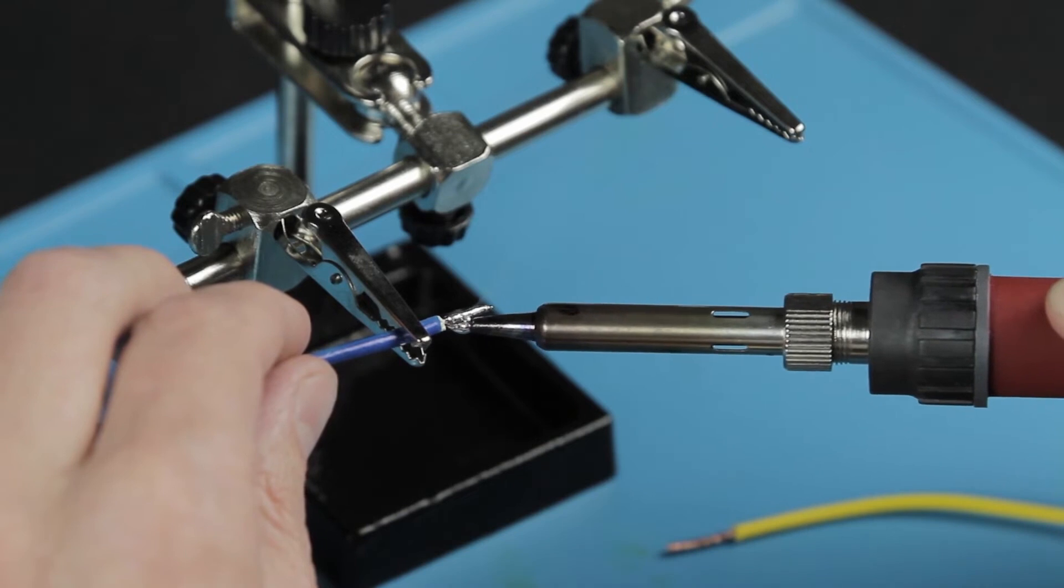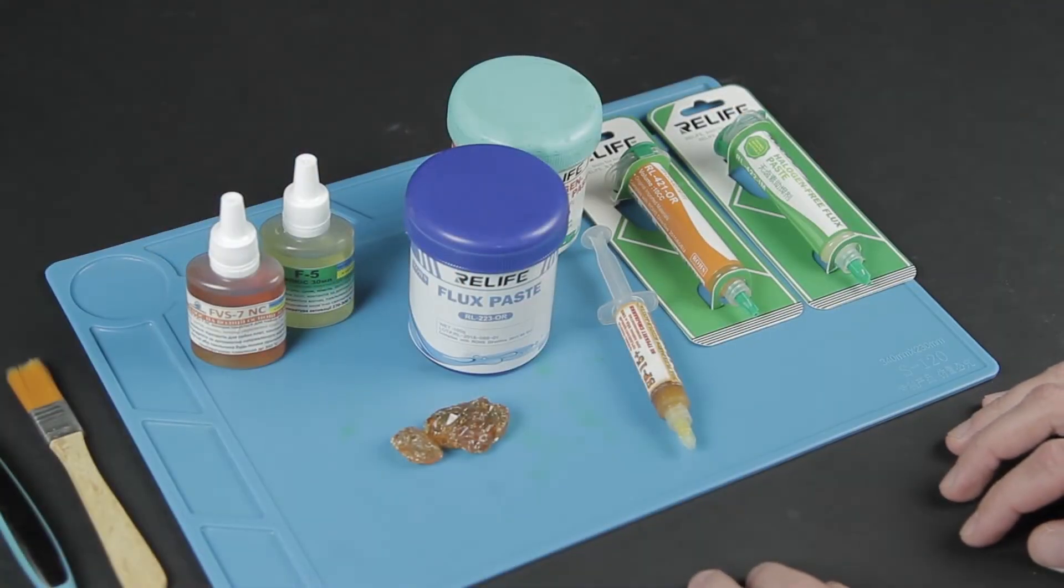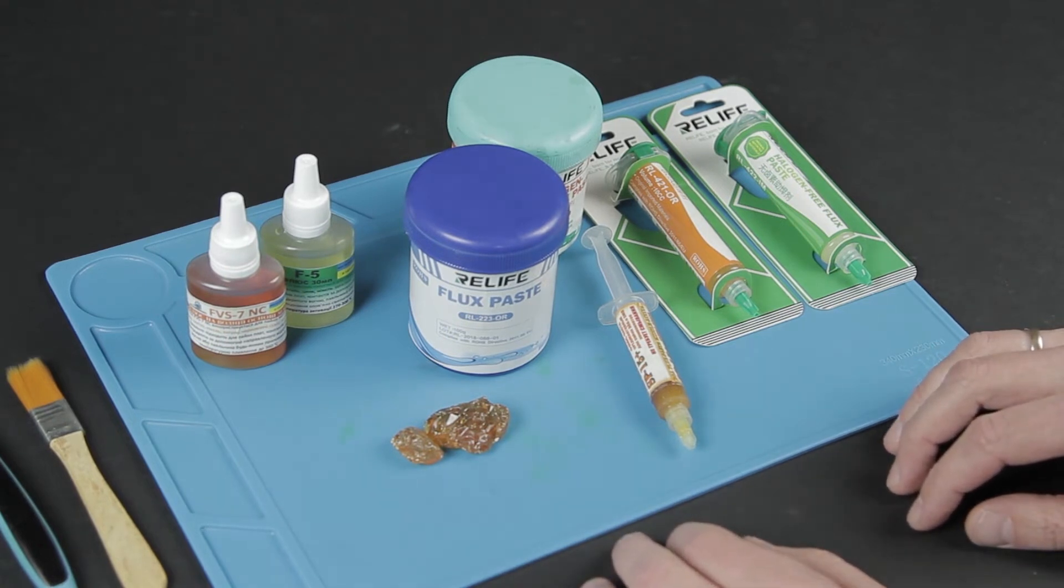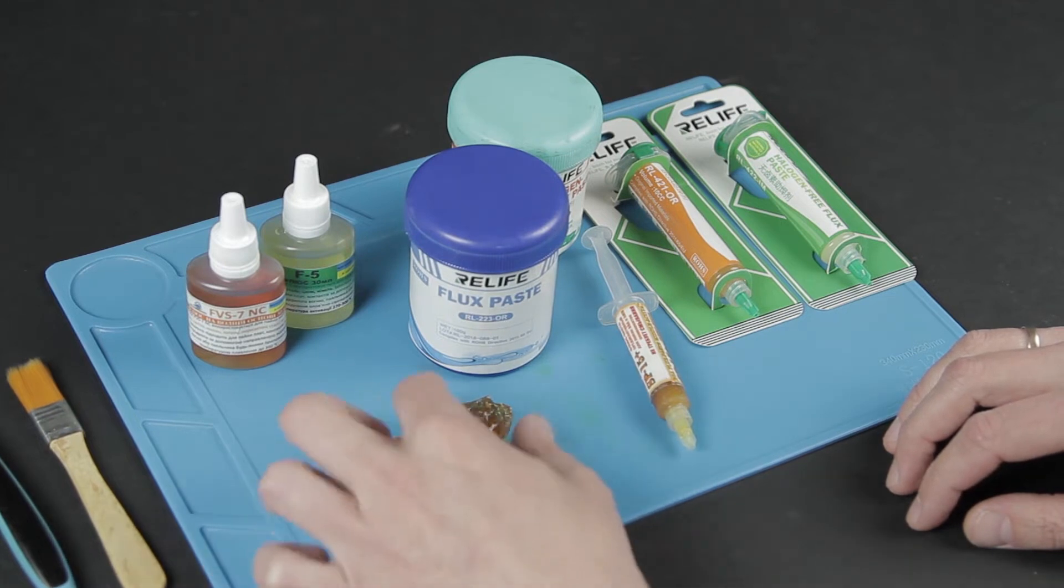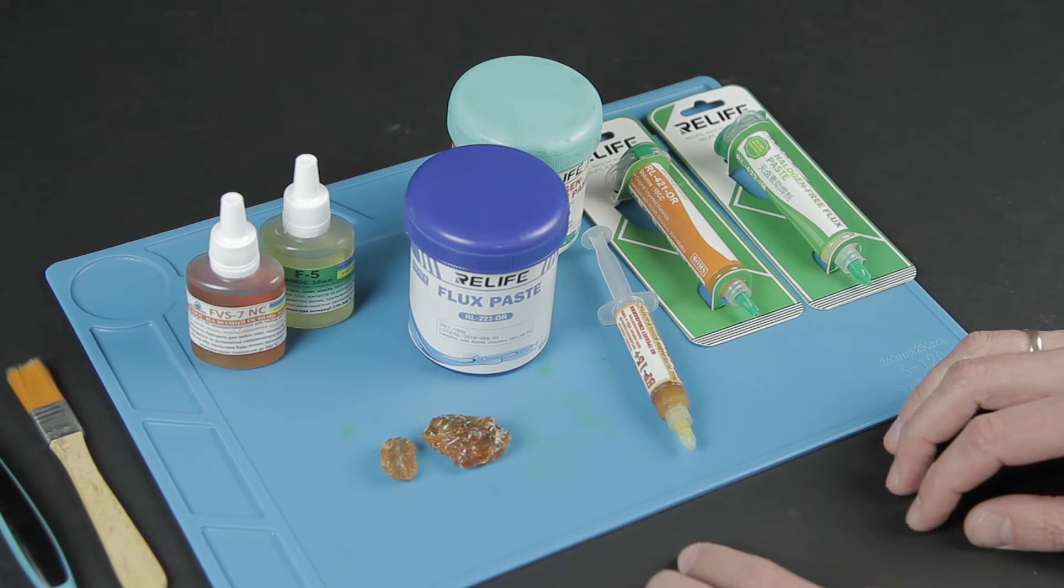The most famous flux is the familiar rosin. Most fluxes are made on the basis of rosin. It is a solution or mixture that contains rosin. Fluxes are liquid or gel-like, and according to their action, they can be divided into neutral, medium-active, and active.